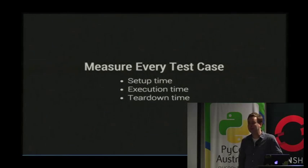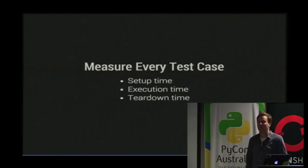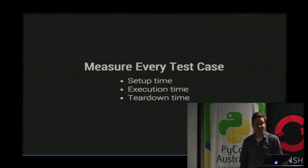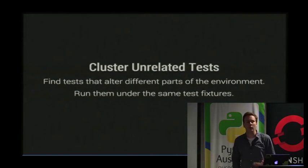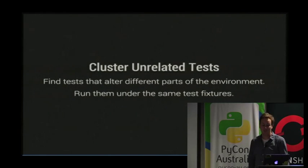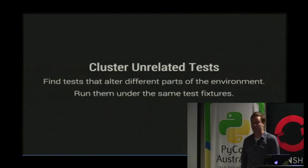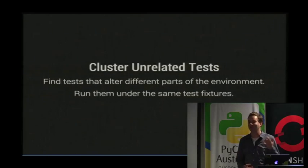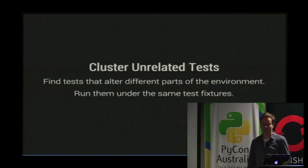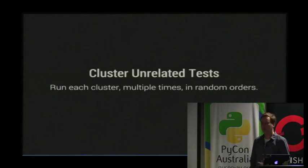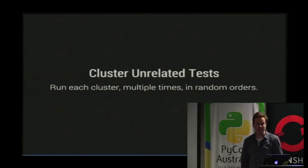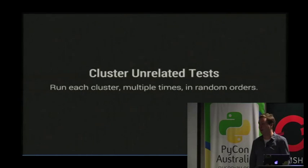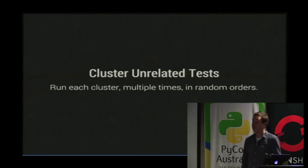Measure everything. Know exactly what time is being spent in your test suite — where time is being wasted during setup and teardown — so you can figure out where you can save time in exchange for absolute correctness on every single test case. Look for tests that don't impede each other within the same test environment. Cluster tests that are unrelated and dealing with unrelated parts of your system. This will obviate the need for isolation and sanitization. To verify you've clustered correctly, run each test case in different random orders each time to check for accidental dependencies between test cases.